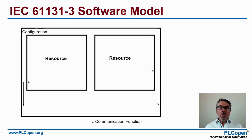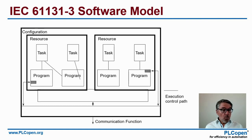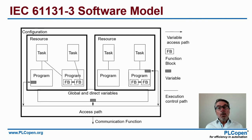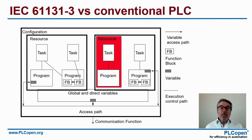Within a configuration, one can define one or more resources — the processing capabilities, the CPUs in the system. Within a resource, you can define one or more tasks. Tasks control programs, or parts of programs like function blocks. Between these, we can have global and direct variables, and access paths for communication.